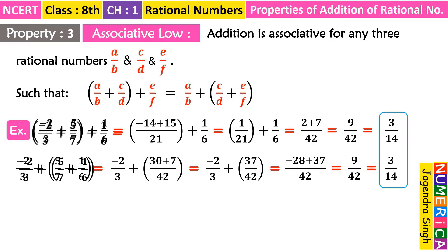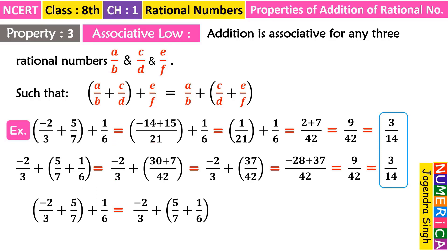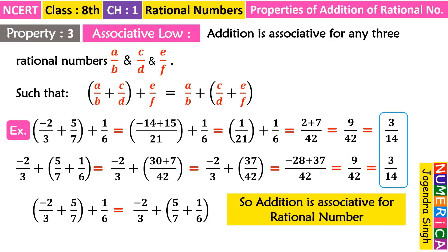We have two associations and both results are the same — 3/14. In the first grouping, the first two rational numbers were grouped; in the second grouping, the second and third were grouped. Both give the same result. So we can say that addition is associative for rational numbers.